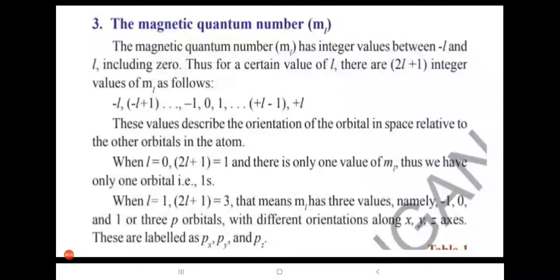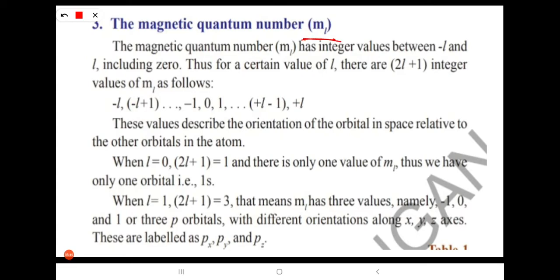The next is the magnetic quantum number, represented by ML. The magnetic quantum number ML has integer values between minus L and plus L, including 0. This was proposed by Lande. For a certain value of L, there are 2L+1 integer values of ML.